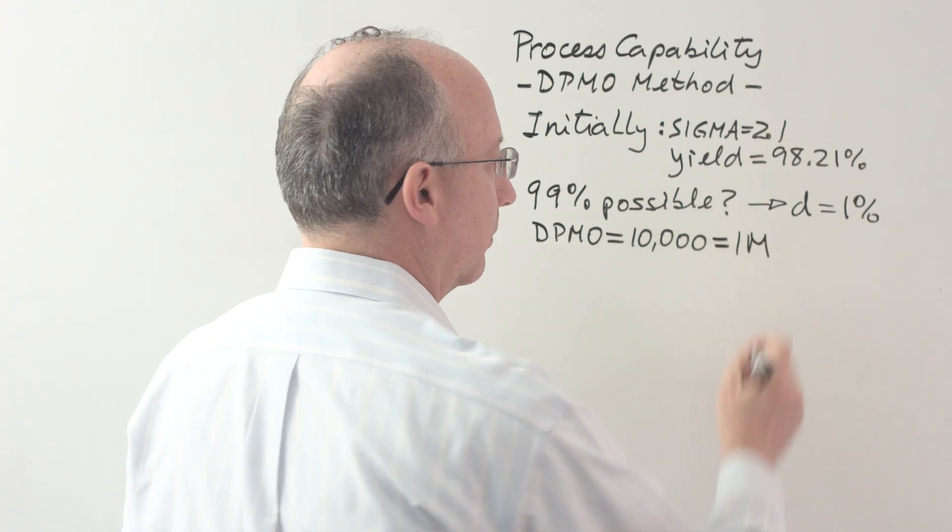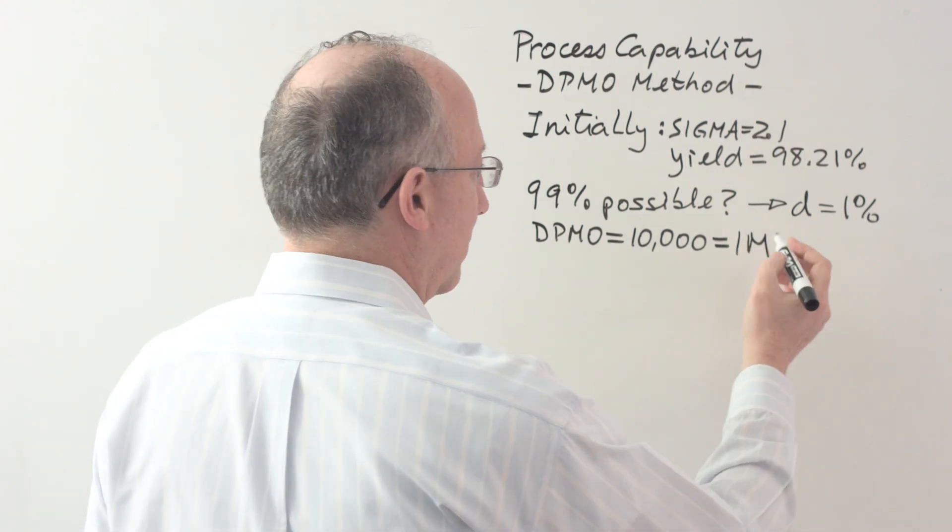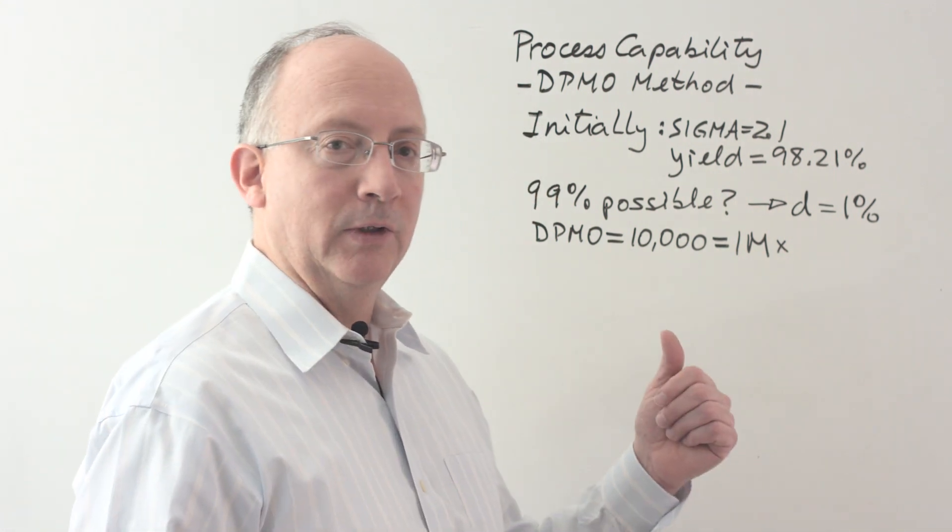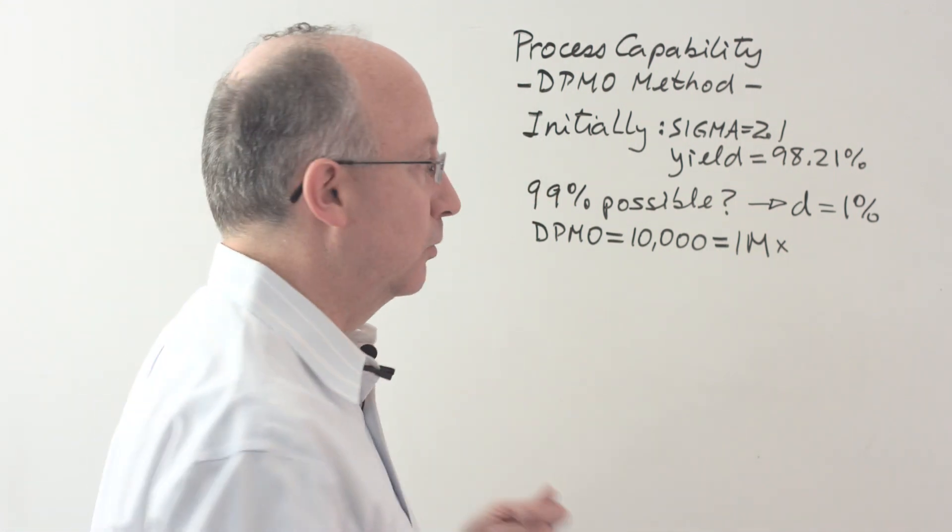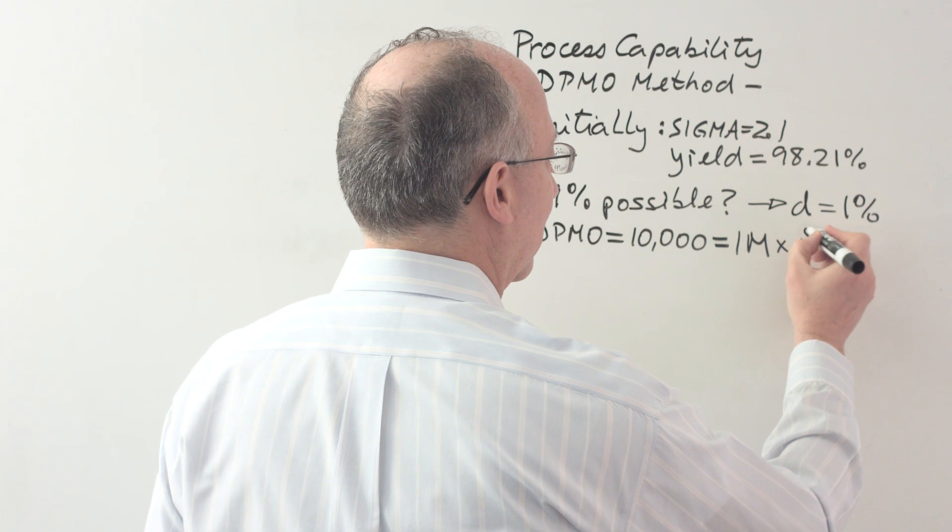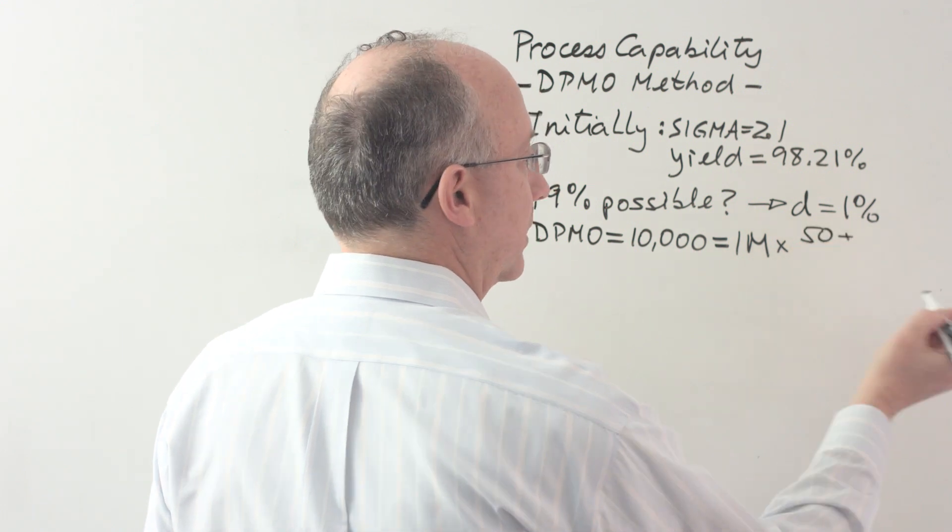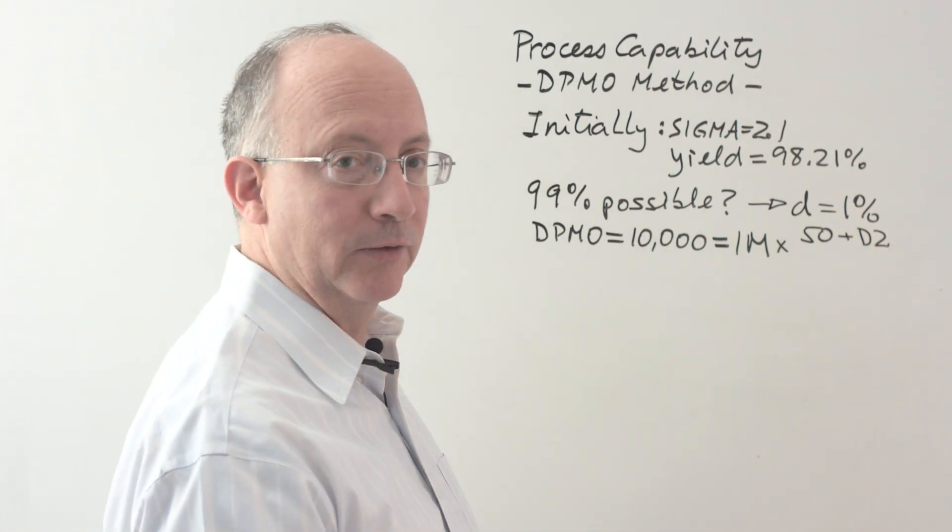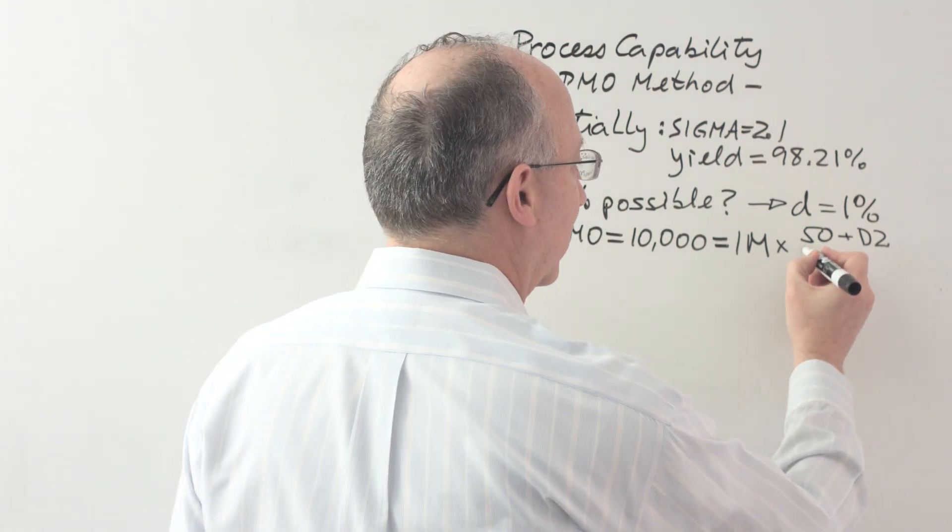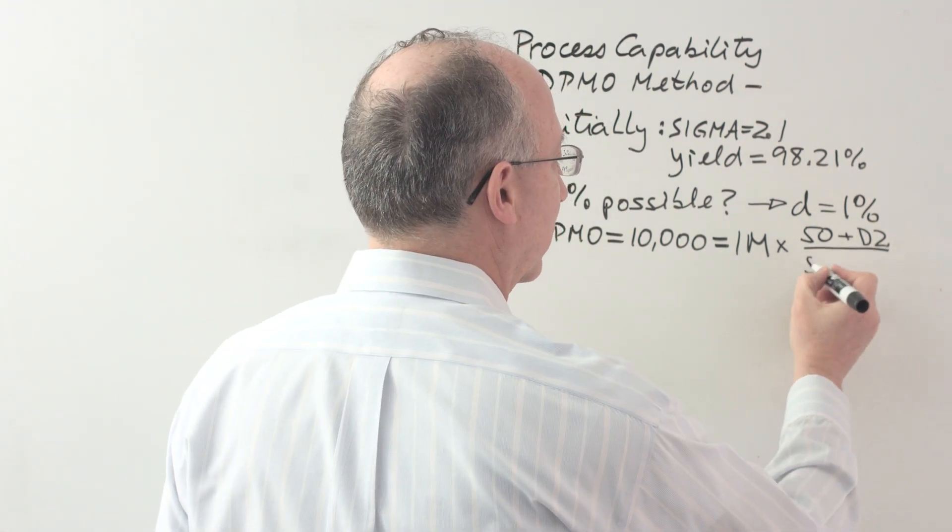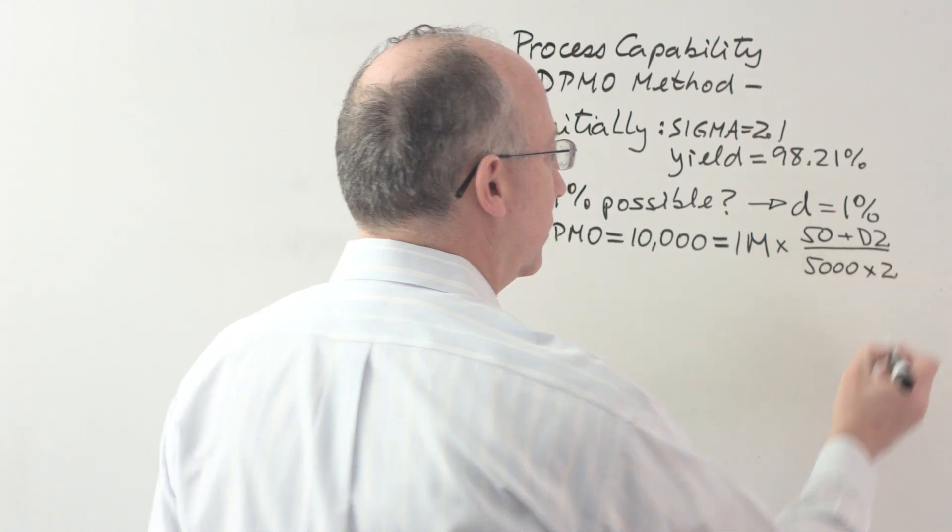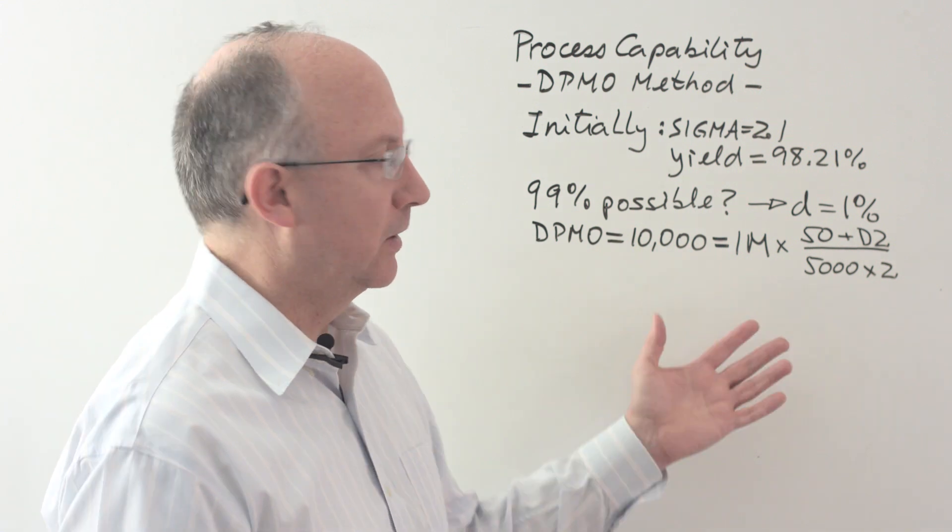If we enter these numbers into the equation, this would be equivalent of saying that 10,000 has to be equal to - I'm just going to write 1 million for 1 million, times the original number of late deliveries that we had, which was 50, plus a target number for incomplete deliveries, divided by the same number that we had before, which was 5,000 deliveries, times 2. This is really the equation now.